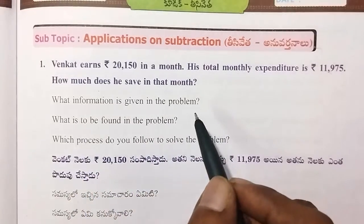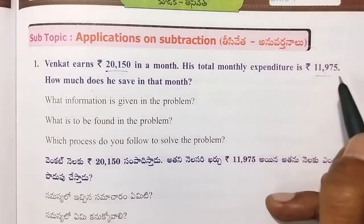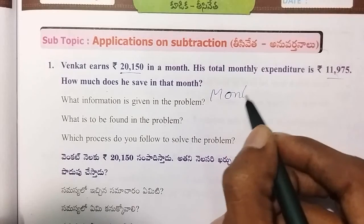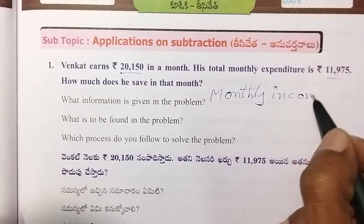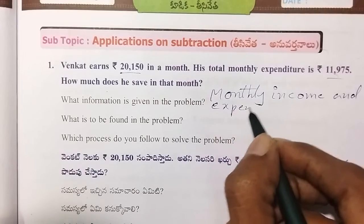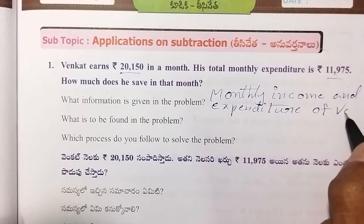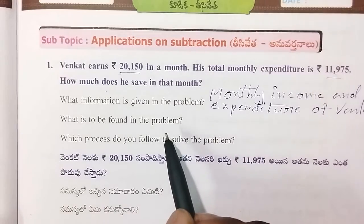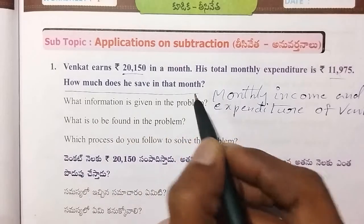What information is given in the problem? The monthly income of Venka Tien is $20,150, and his monthly expenditure is $1,975. What is to be found in the problem? How much he can save in the month.